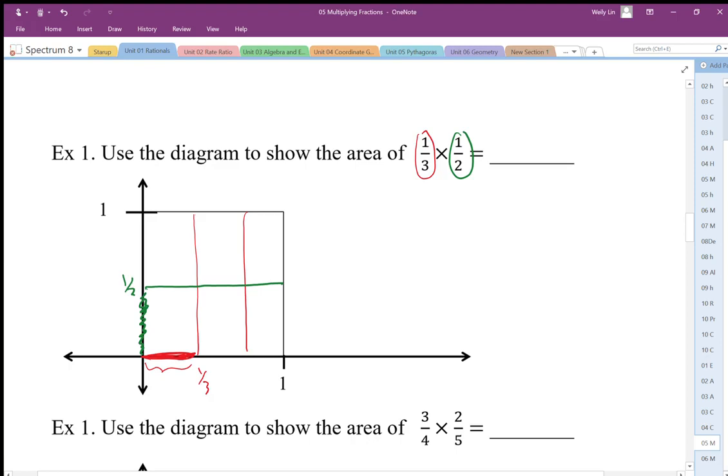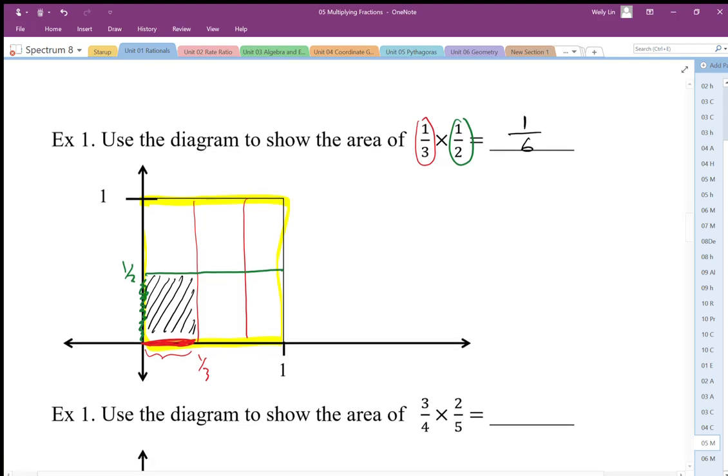So length times width, the area that I want is this area in here. The length times the width area. So what is that area? Well, that area in terms of the whole, well, the one by one square represents a whole. There's six pieces that make up this whole. So then that must be my denominator. It must be out of six. And there's only one of those six pieces that are shaded. That's the area that I want. So one-third times one-half gives me the area of one-sixth, and my diagram confirms that.